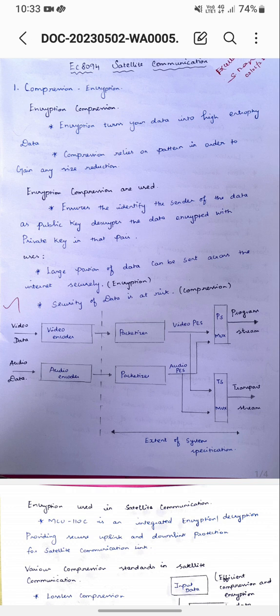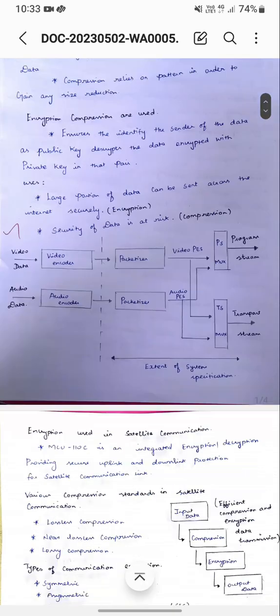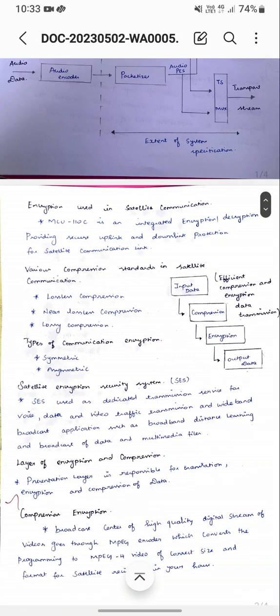A large portion of data can be sent across the internet securely. However, security of data is at risk with compression usage. Encryption is used in satellite communication. MCU-110C is an integrator for encryption and decryption, providing secure uplink and downlink protection for satellite communication links. MCU-110C is a multi-point control unit for audio-video conferencing, controlled by a single location.